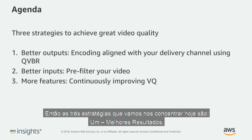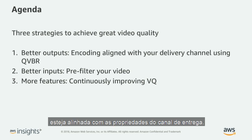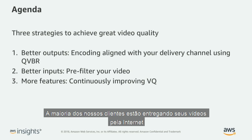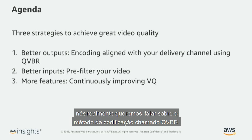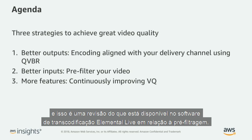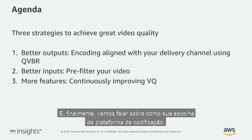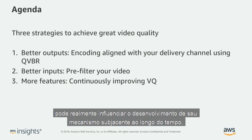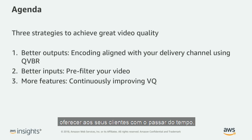The three strategies we're going to focus on today are: one, better outputs — making sure that the encoding you're doing is aligned with the properties of the delivery channel, specifically the encoding method called QVBR, Quality Defined Variable Bit Rate, for OTT customers. Second, better inputs — a review of pre-filtering available in Elemental Live transcoding software. And lastly, how your choice of encoding platform can influence the development of your underlying engine over time.